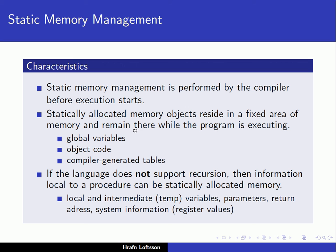This is used for something the compiler can deduce — something it can place in a fixed area of memory that remains there while the program executes. An example of that is global variables. Global variables are static because there is only a single copy of them alive during execution of the program, and they are accessible to every function of the program. The compiler can allocate this global variable in a fixed area of memory, and it just remains there while the program is executing.